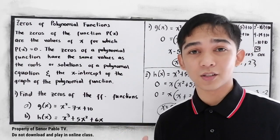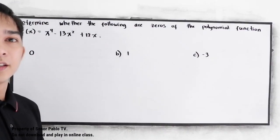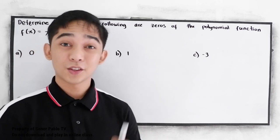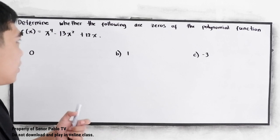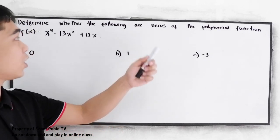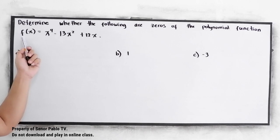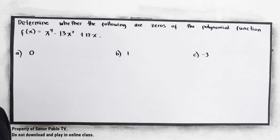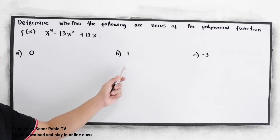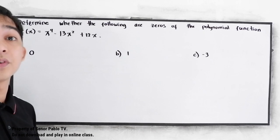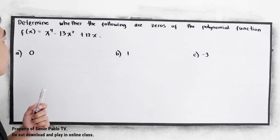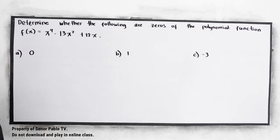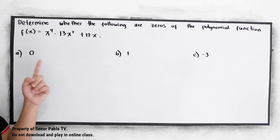Let's have another example. Determine whether the following are zeros of the polynomial function f of x is equal to x raised to 4 minus 13x squared plus 12x. Options: a) 0, b) 1, c) negative 3. So we are going to test whether substituting these numbers will give us 0.